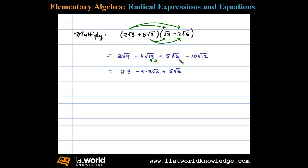Notice here six is two times three — there are no square factors. Minus ten times the square root of twelve. Now twelve is four times three, so the square root of twelve simplifies to two square root of three.